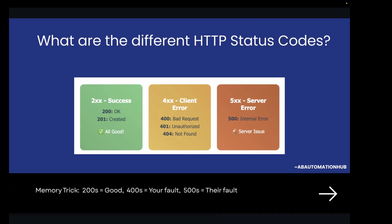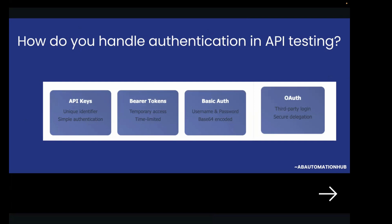How do you handle authentication in API testing? Authentication is just like showing your ID card. There are several ways an API checks who you are: API keys are like a membership card with a unique number; bearer tokens are like a temporary pass that expires; basic authentication uses a username and password, just like logging into email; and OAuth is like using Google or Facebook to log in to your applications. While testing, I get all these credentials from my dev team and add them to the request headers.